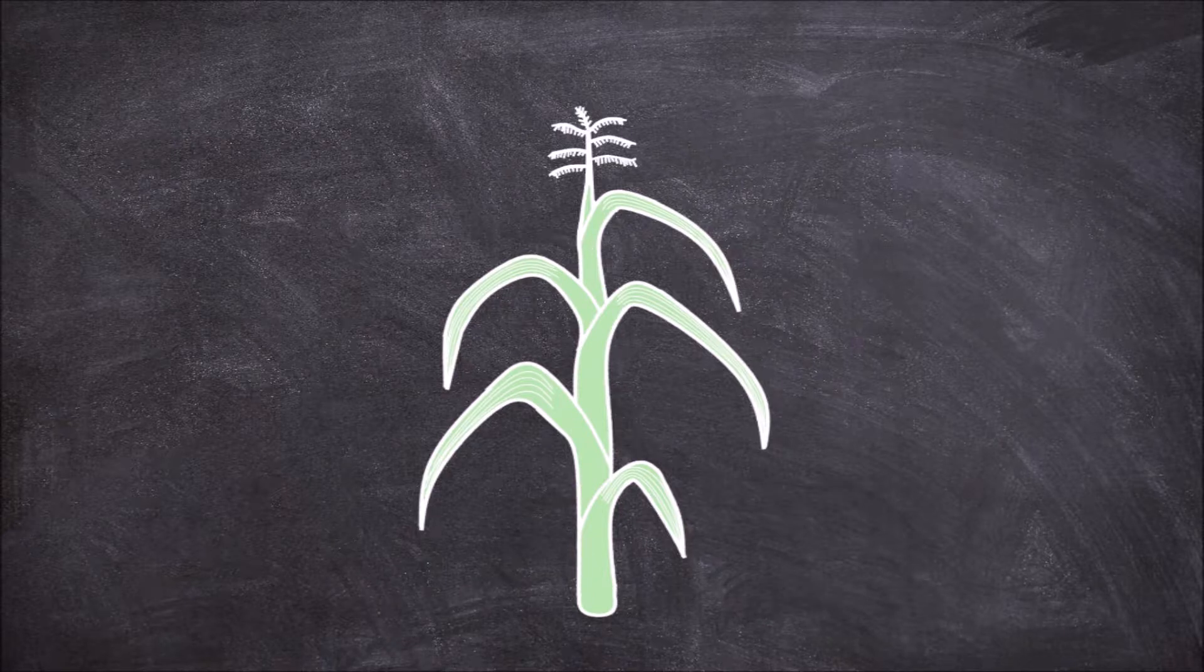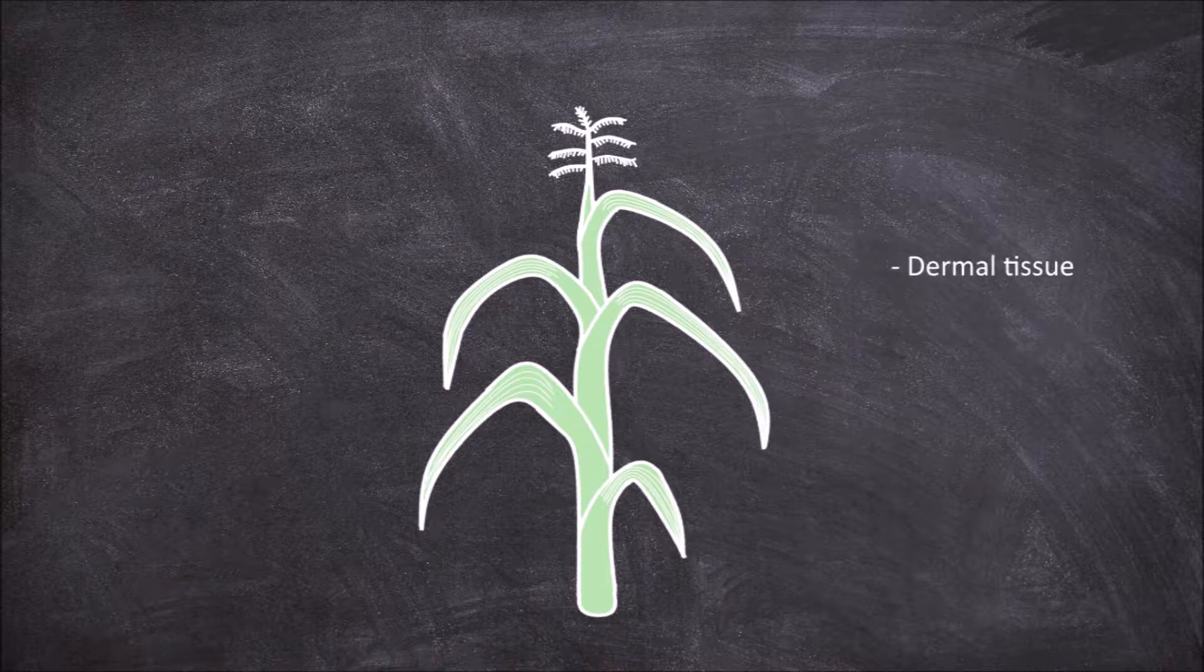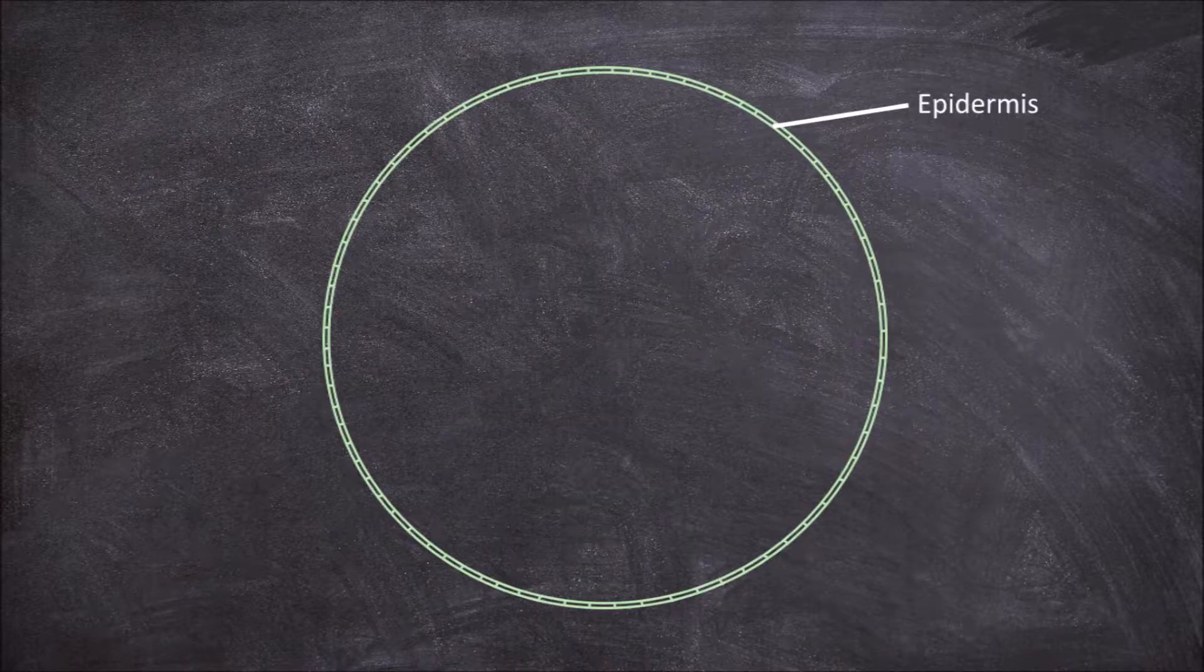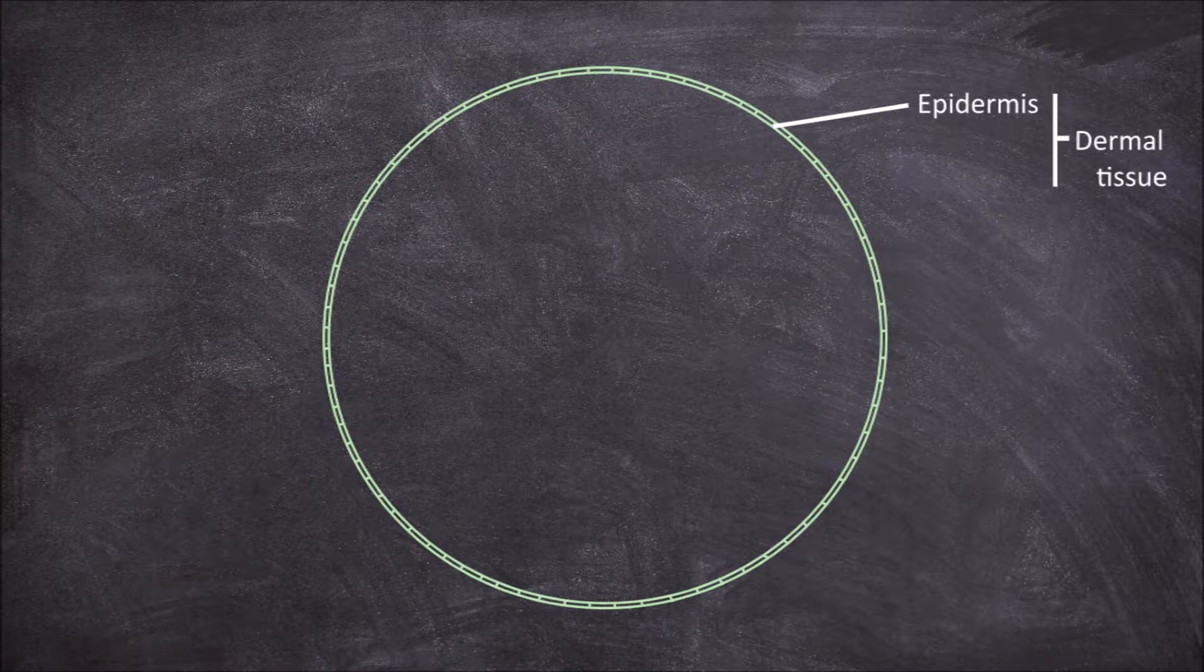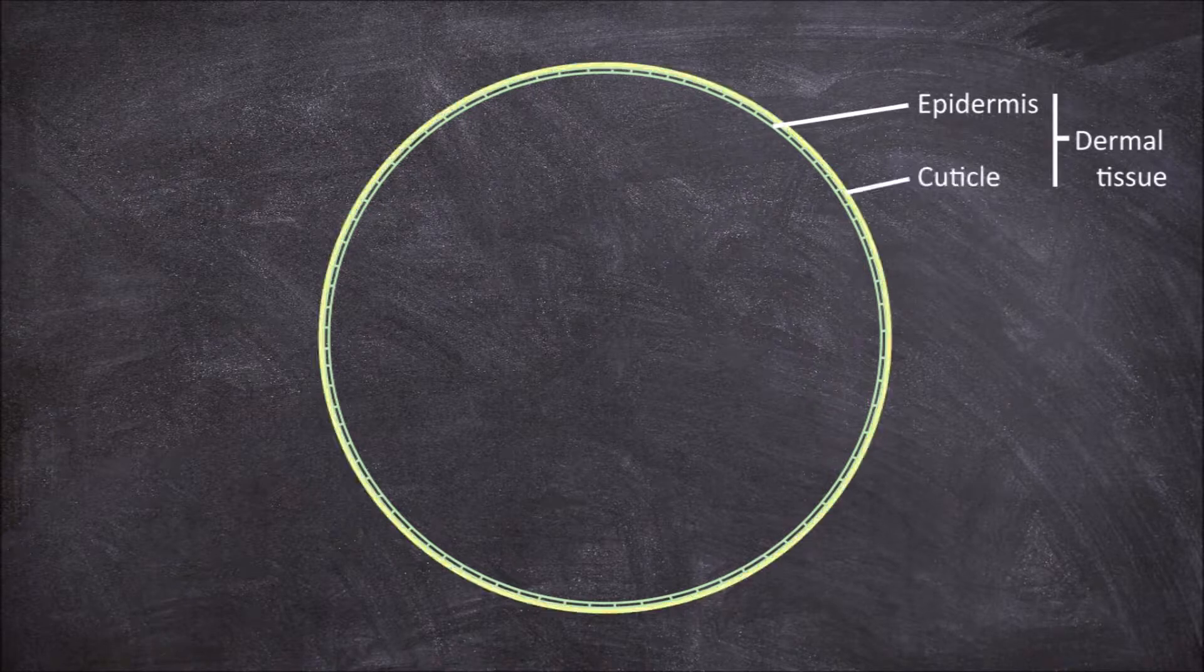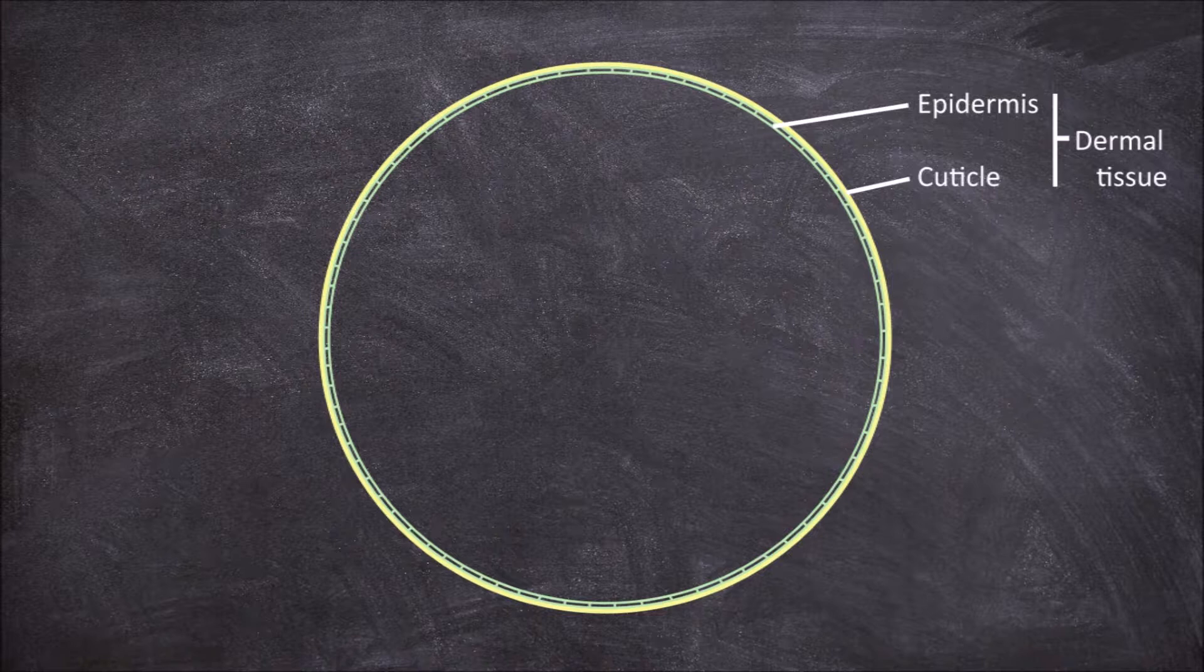Within the stem, like in all other plant organs, there are three types of tissue: dermal, ground, and vascular tissue. If we take a cross section through the stem we will find the outer layer consists of the epidermis. This is the dermal tissue. The epidermis is covered in a cuticle layer that functions in protecting the stem.